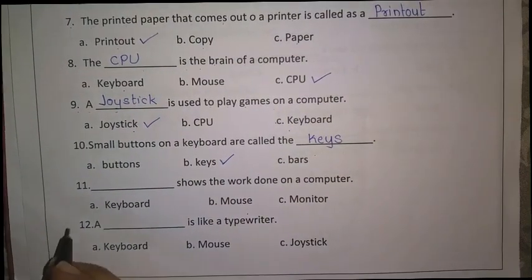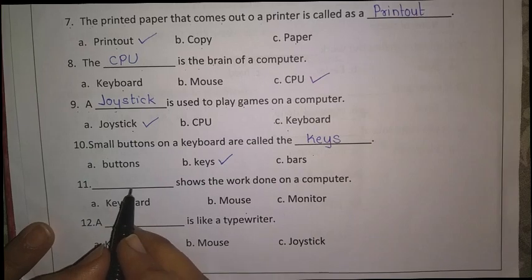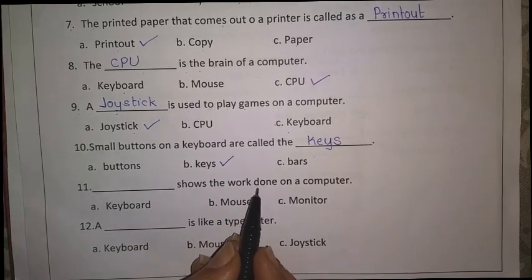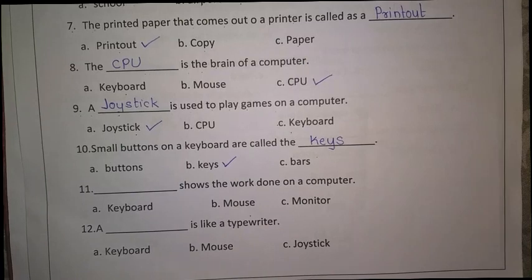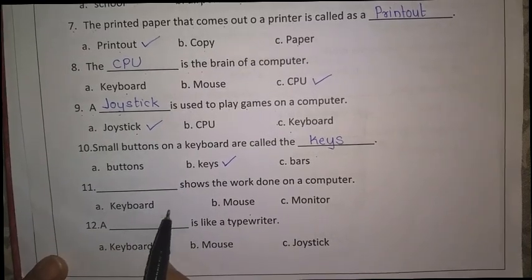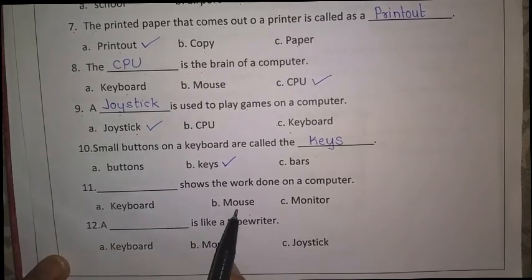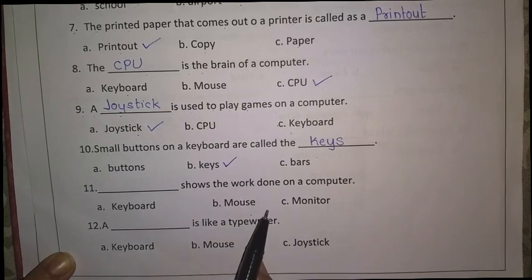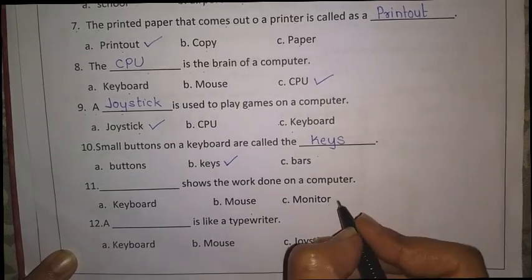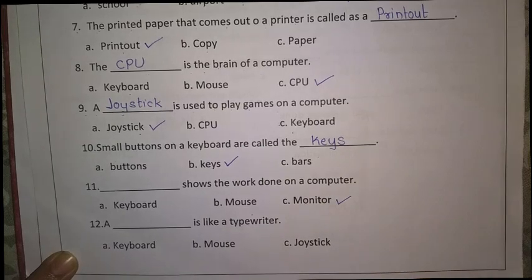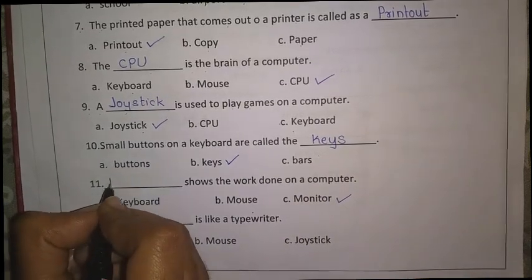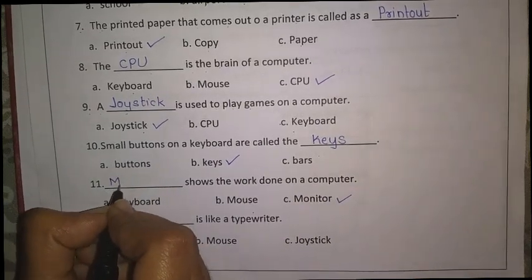Now eleventh one: Dash shows the work done on a computer — a keyboard? No. A mouse? No. Then a monitor? Yes. So give a tick over monitor. Very good! You can write here: monitor also.